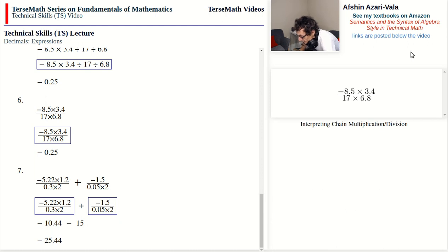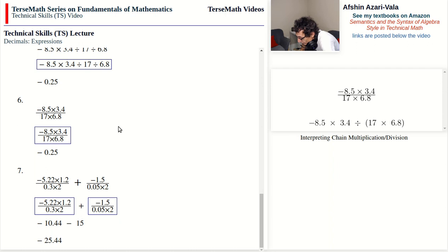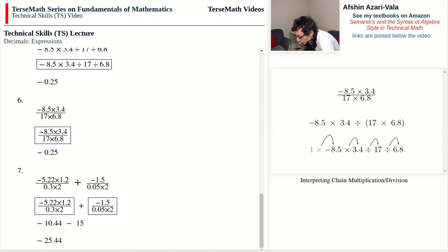In the previous problem number six, the setup with a horizontal line means we are dividing by everything on the bottom, which is why brackets are needed — otherwise we would only divide by 17 and then multiply by 6.8. Division by a product becomes individual divisions. The top expression can be worked out by computing top and bottom separately then dividing — best for hand calculation — or by multiplying the top and dividing by each denominator factor in sequence — best for a calculator.